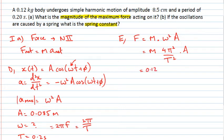My mass is 0.12 times 4 times pi squared times my amplitude, 0.085 divided by the period, 0.2 all squared. Now, if I put that in my calculator, I end up with my force being 10.0 newtons.